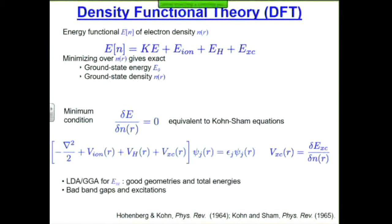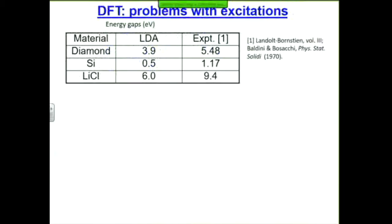There are many approximations. Standard ones go by the names of LDA — local density approximation — and GGA — generalized gradient approximation — which give you excellent geometries, that is, where the atoms are, and the total energy E0. But they give you pretty bad band gaps, which is the energy you have to pay to excite an electron. Let's focus on that.